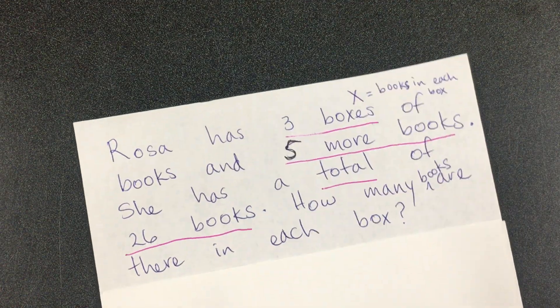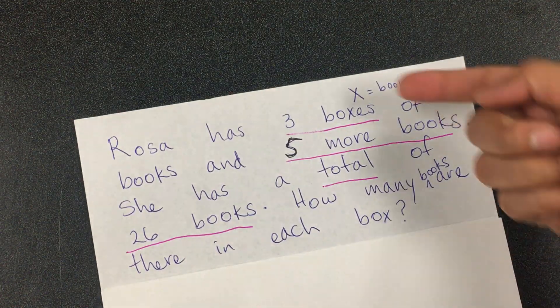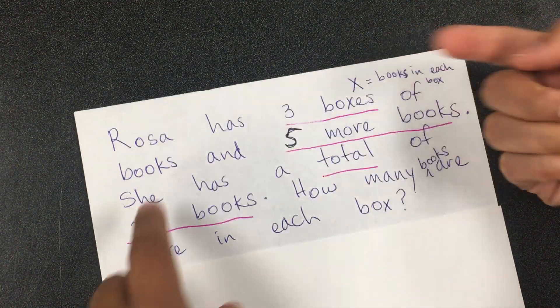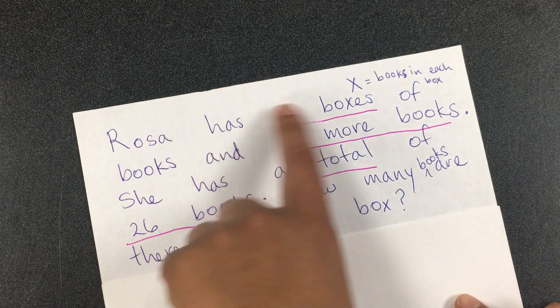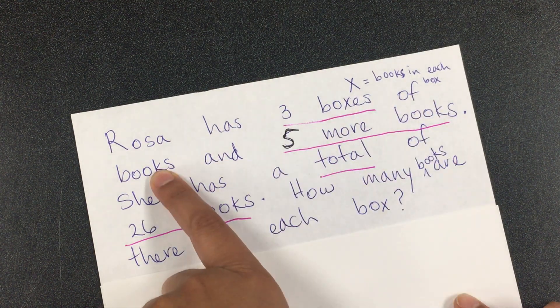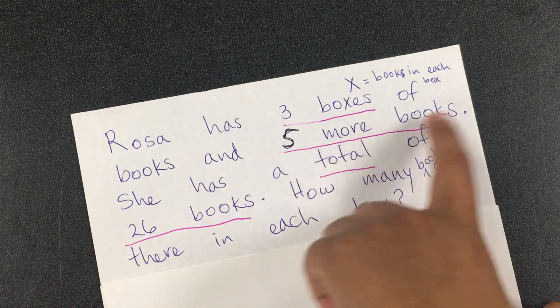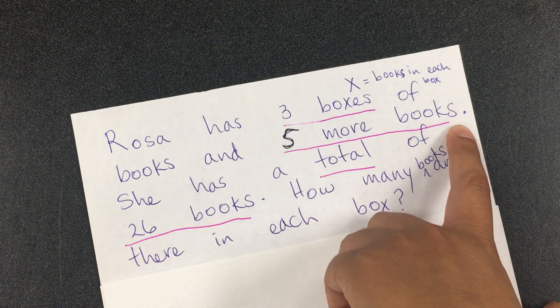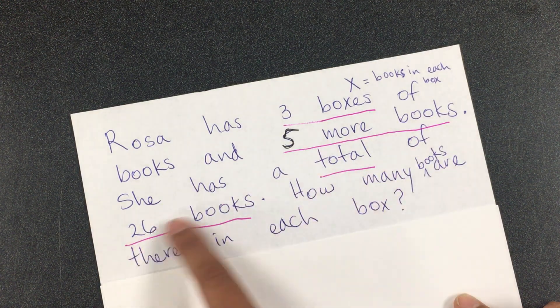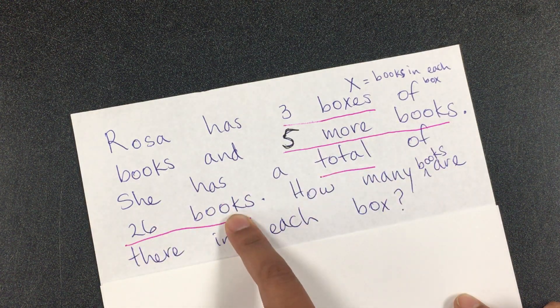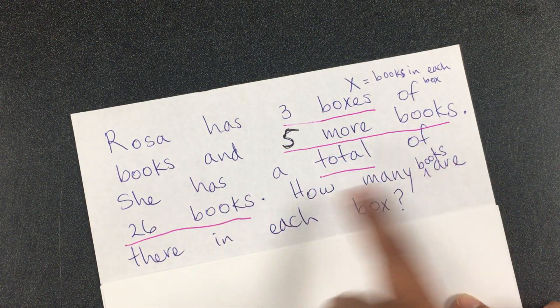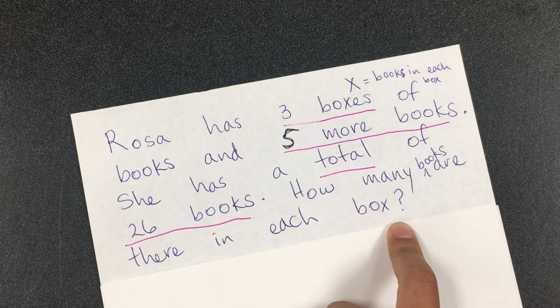Here is the first example. It says: Rosa has three boxes of books and five more books. She has a total of 26 books. How many books are there in each box?